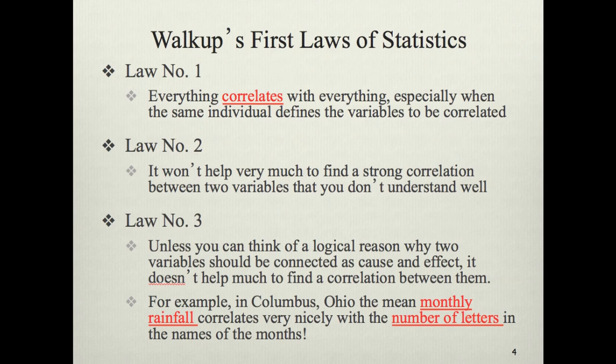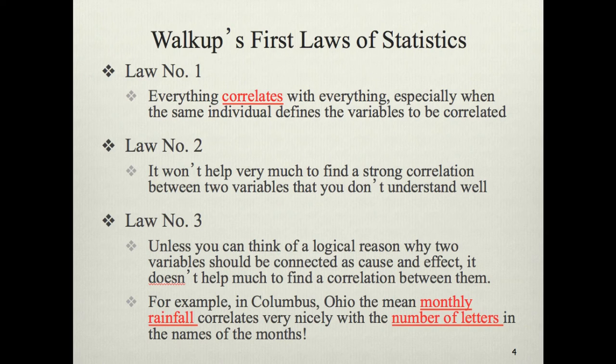Walkup's first laws of statistics. Law number one: everything correlates with everything, especially when the same individual defines the variables to be correlated. This is particularly true in the social and behavioral sciences — if we're measuring job attitudes like job satisfaction, organizational commitment, intention to turn over, and perceived organizational support, we'd find a lot of things mildly correlated with each other. In biomedical or physical sciences it's a bit different, but typically, with a large enough sample, just about everything is correlated with just about everything else, at least a little bit.